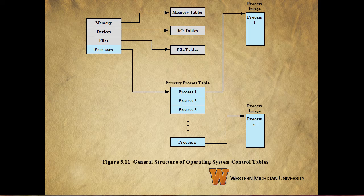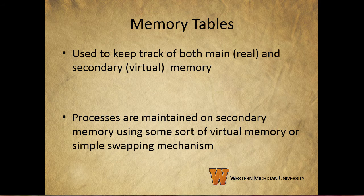Although the details are going to be different from one OS to the other, fundamentally every OS maintains information in these four categories. Let's take these categories one by one. First, we'll talk about memory tables. These are used to keep track of both the main real memory and secondary or virtual memory.